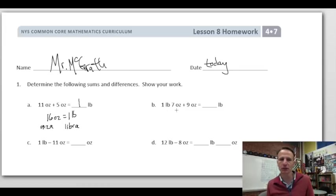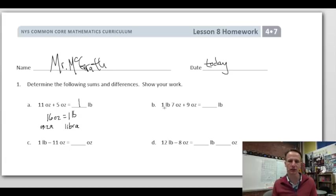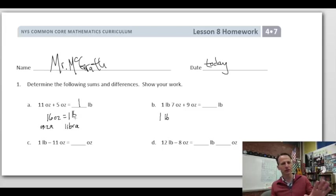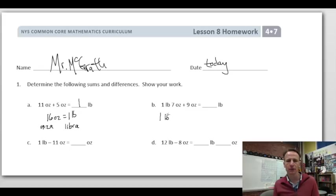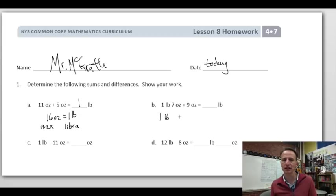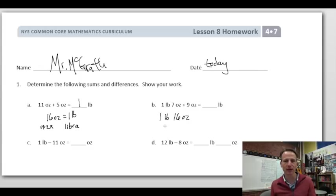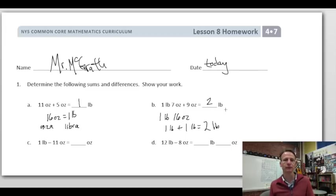Problem 1b: one pound seven ounces plus nine ounces. Add pounds with pounds — there are no pounds on the right side so we still have one pound. Then seven and nine make 16 ounces, which equals one more pound. So altogether that's two pounds, with no remaining ounces.